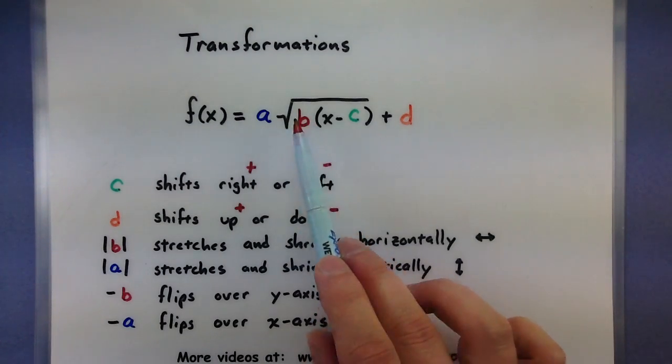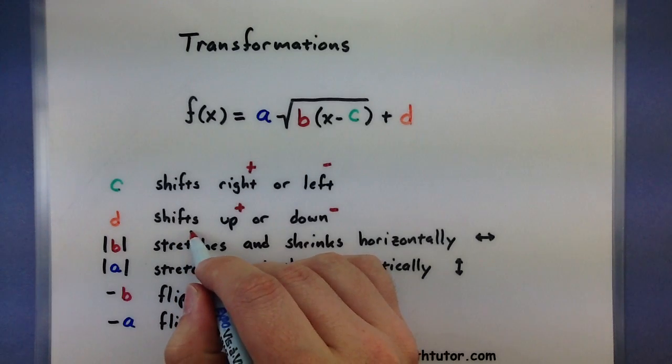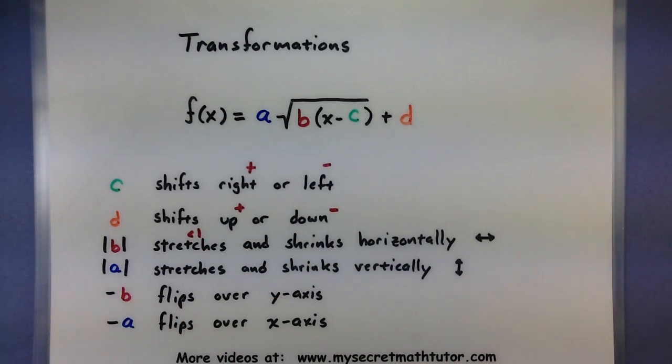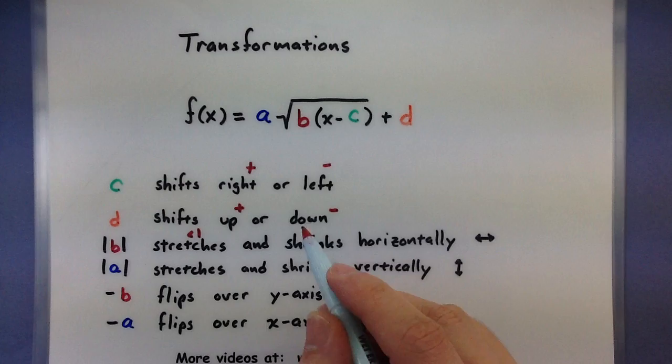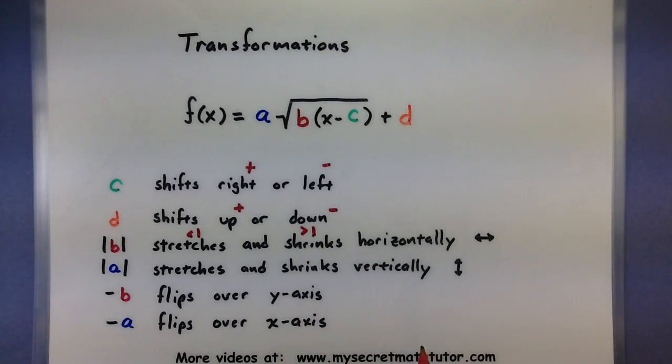Let's start with this one on the inside. If that one is less than one then it will actually stretch it horizontally which seems counterintuitive, if I'm less than one actually gets bigger but yeah that's what happens. If it is greater than one then you will get a horizontal shrink so make it smaller in the horizontal direction.